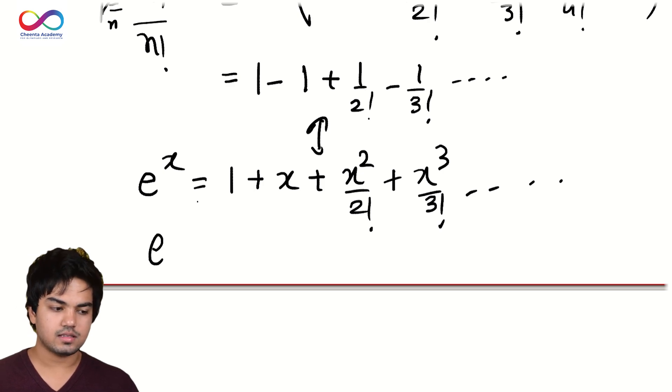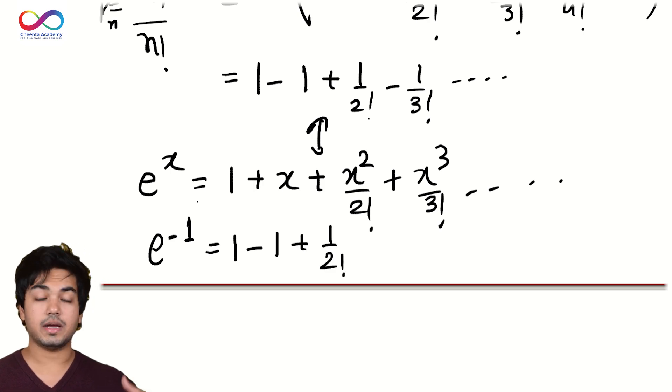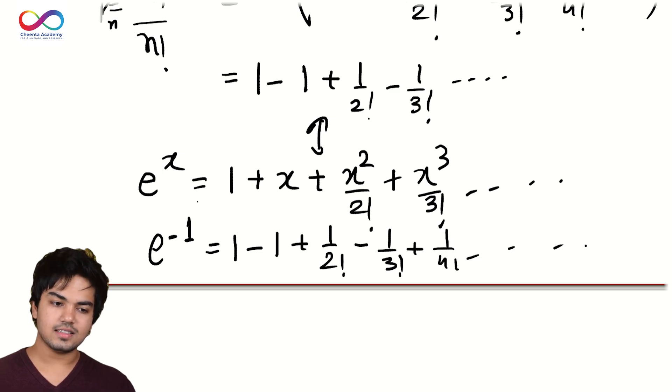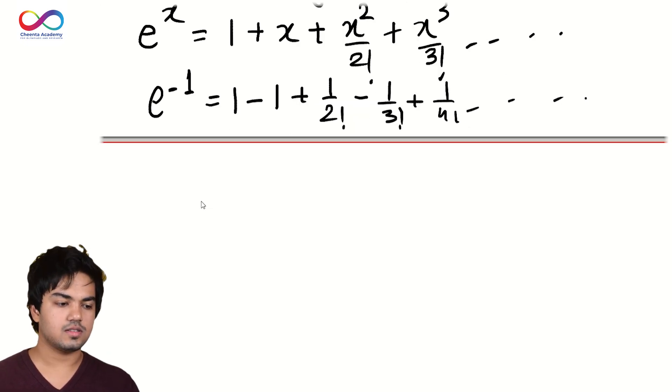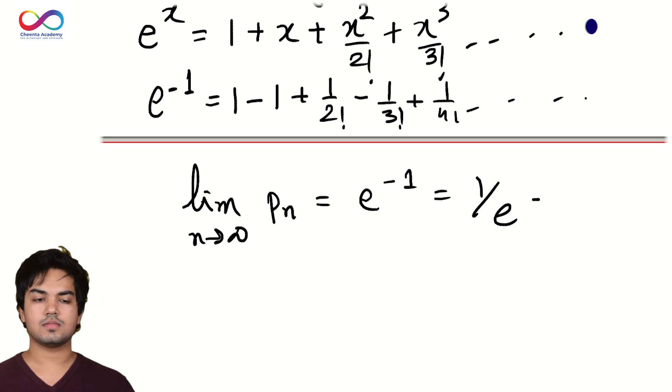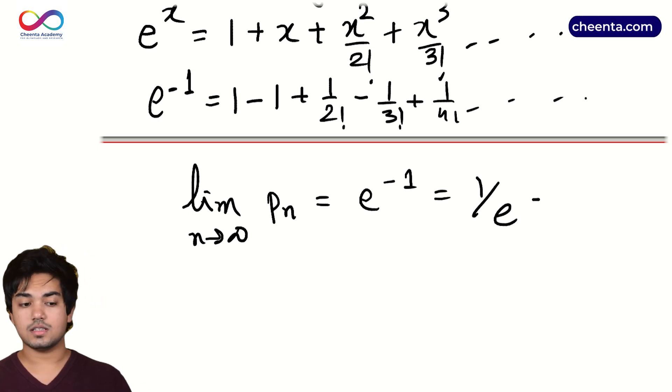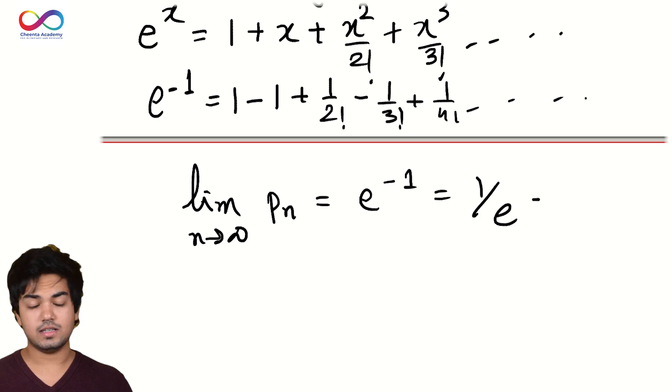You probably see where this is going. If I set x equals minus one in this, I get one minus one plus one by two factorial, right? Minus one squared is one. Minus one by three factorial plus one by four factorial and so on. Hence, curiously enough, the limit as N tends to infinity of P_N equals e inverse or one by e. That's really fun and interesting. And the fact that e shows up at all is very surprising. But it's really cool that it happens.